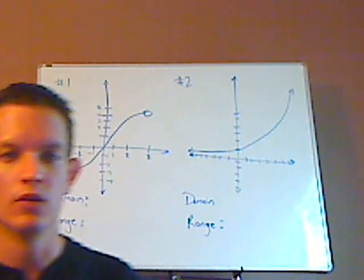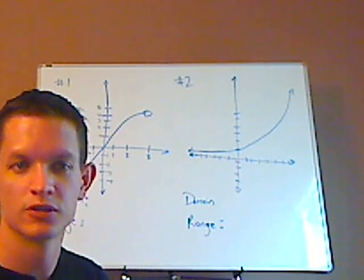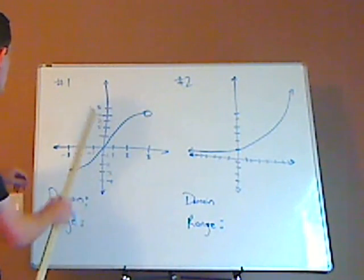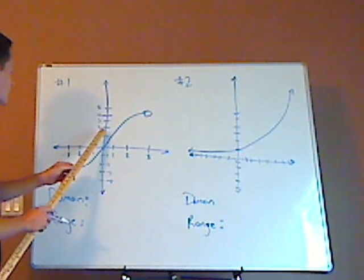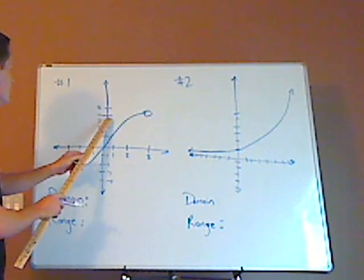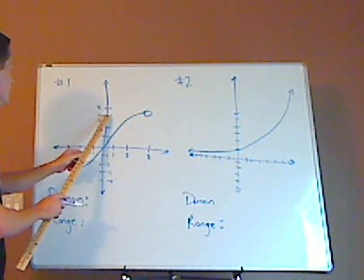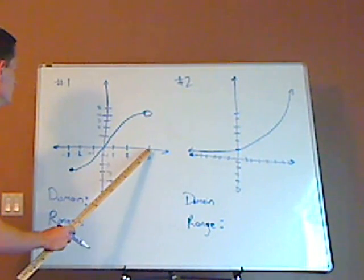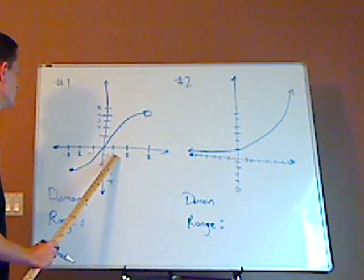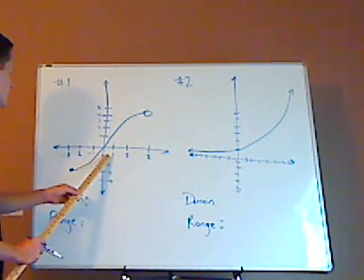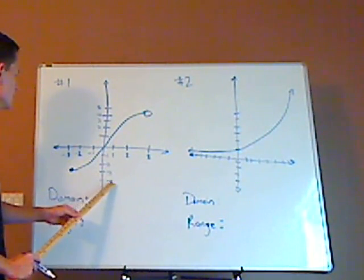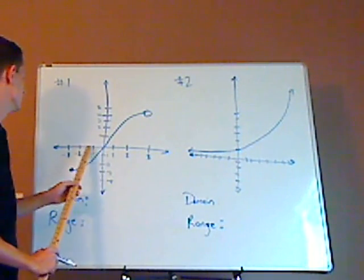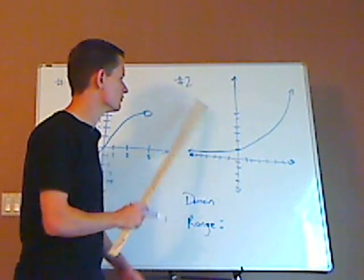If you would, let me help you to read it, because it might be a little hard to see. For problem number one, this counts as 1, 2, 3, 4, 5, and this is more lined up with the 4 right here. This is 3, 2, 1, negative 1, negative 2, negative 3, negative 4, and then here is negative 1, negative 2, negative 3.